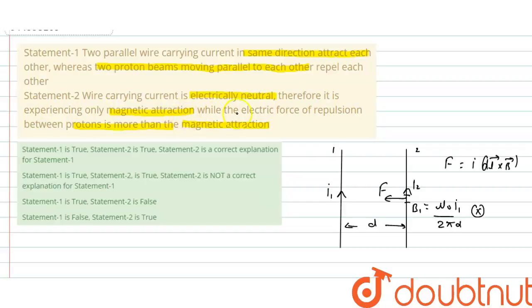So these two wires attract each other, while electric force of repulsion between protons is more, what I said, than magnetic attraction. So this is a correct explanation, so correct option is this. I hope this is true explanation.